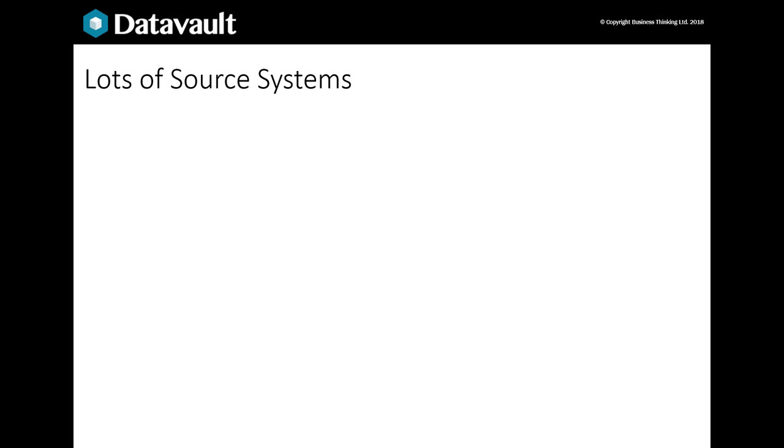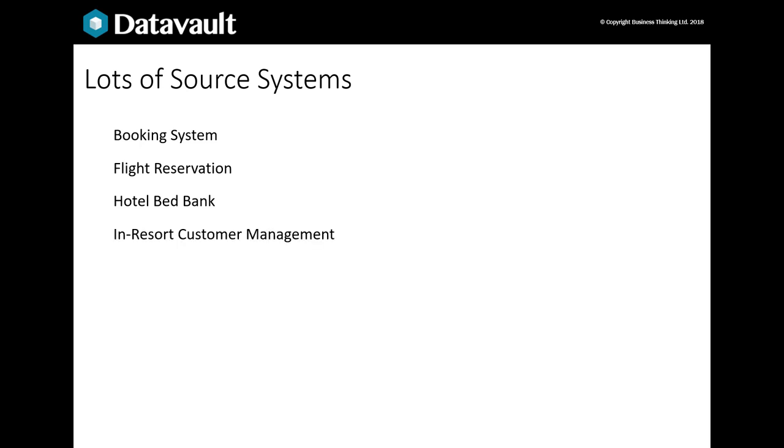A typical travel business would also have a number of systems where that data is buried. There'll be a booking system taking bookings, assembling holidays and administering payments. A flight reservation system will book flight tickets. A hotel bed bank will provide details of available accommodation in resorts at trade prices. Customers are supported by reps, collected from the airport, allocated rooms, sold extras, and gather feedback using an in-resort management system.